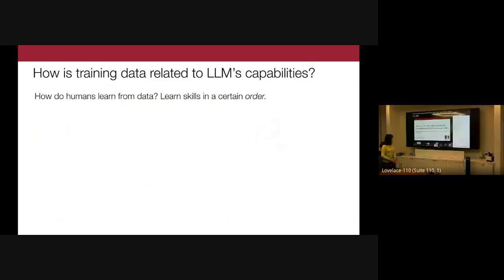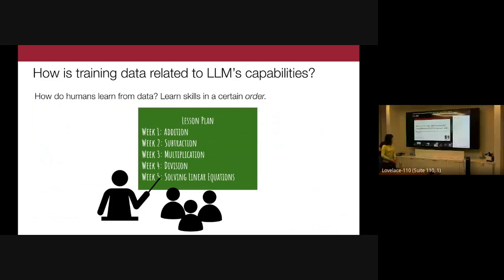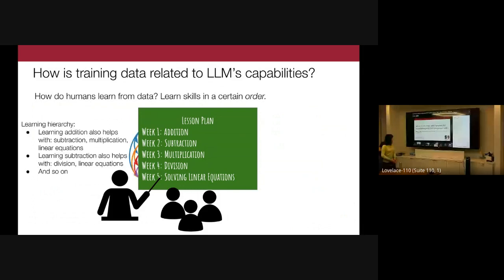To dive into how language models acquire capabilities through training data, let's take a step back and think about how humans learn. There's a ton of literature spanning several decades on curricula — how do we show a sequence of skills or concepts to students so they can best learn them? When teaching math, it's reasonable to start with addition and then build into multiplication, division, and so on. In the 1960s, educational psychologists proposed a learning hierarchy where certain prerequisite skills were very influential for helping students acquire more advanced skills.